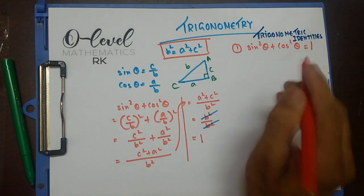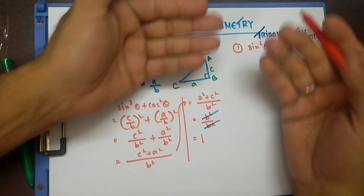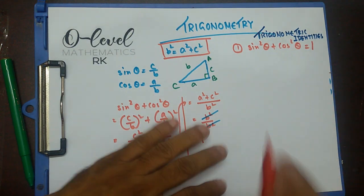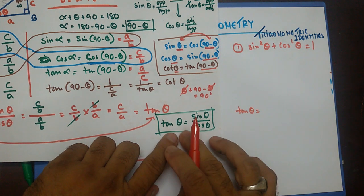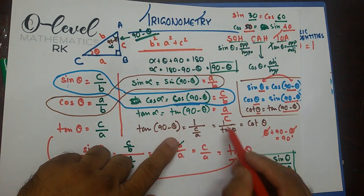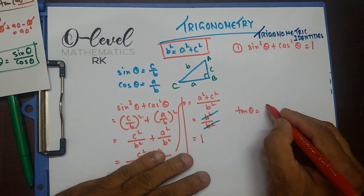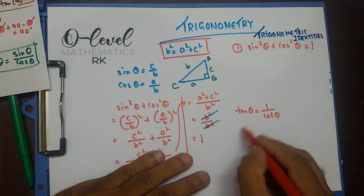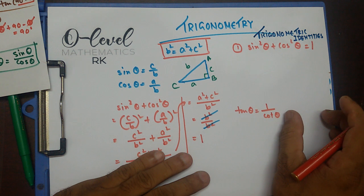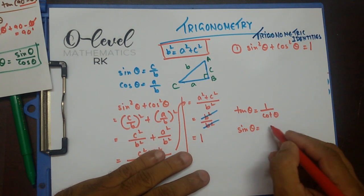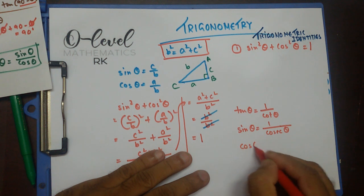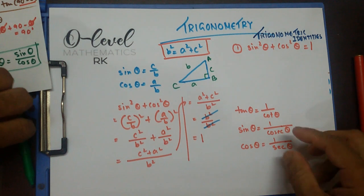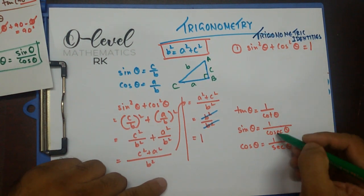A lot of students learn three different identities, but I teach only one, and then I tell them how to derive the other two. To get the other two, you have to know that tan theta equals sin theta by cos theta, and that cot theta is the reciprocal of tan theta, so tan theta equals 1 by cot theta. These are reciprocals, so if we multiply them it always comes to 1. These three — cot, cosec, and sec — are another three trigonometric ratios. The first three ratios were sine, cosine, and tangent.